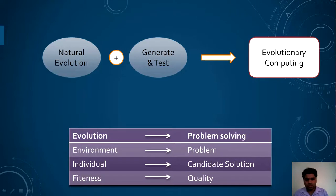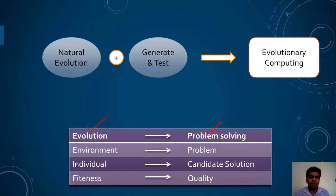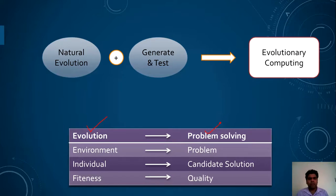Evolutionary computing is a proper mix of natural evolution and the generate-and-test strategy. Let's see how both are similar. In natural evolution, evolution corresponds to problem solving in evolutionary computing. Environment maps to problem; individual maps to candidate solution; and fitness maps to quality in evolutionary computing. So evolutionary computing is a proper combination of generate-and-test strategy and natural evolution.